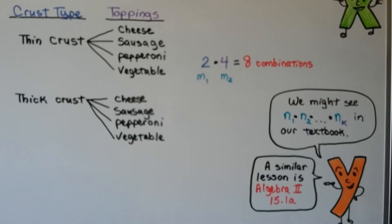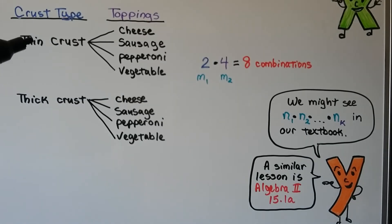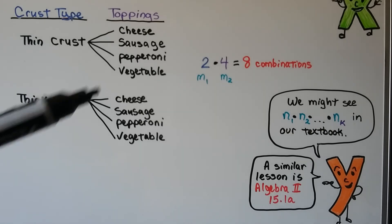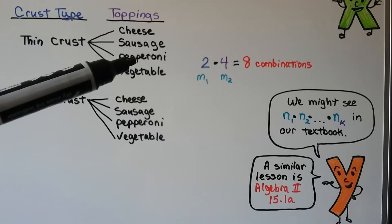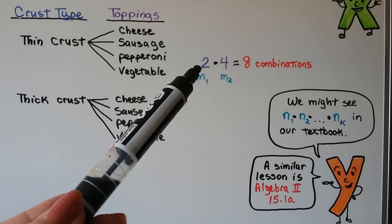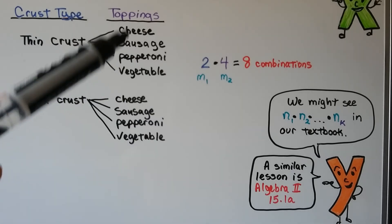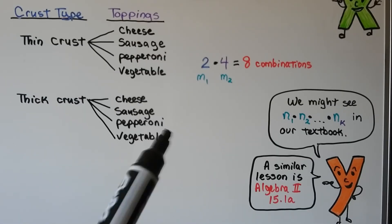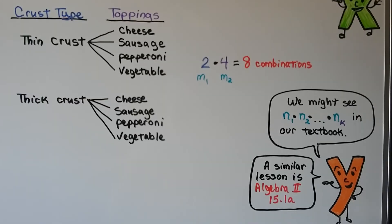For ordering a pizza, if we had a choice of crust types of thin crust or thick crust and these four different toppings, we would do the two crust types as our m sub 1 and the four different toppings as our m sub 2 to know that there's eight possible combinations to order the pizza.